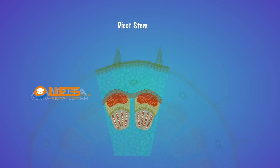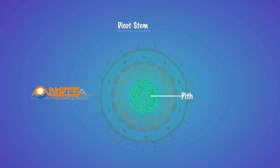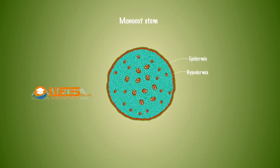Vascular bundles are wedge-shaped and are arranged in a ring, which is an important feature of the dicot stem. Each vascular bundle contains xylem and phloem. The parenchyma cells of the central portion of the stem make up the pith.